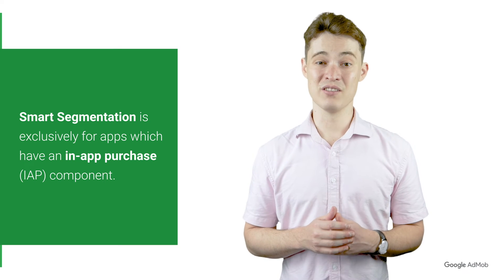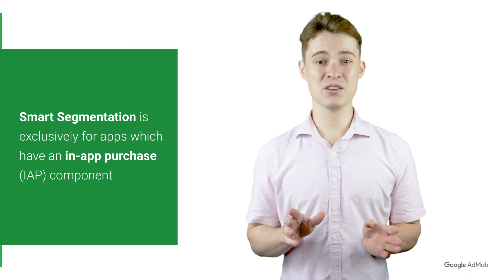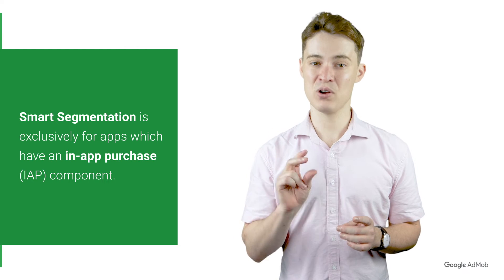Since Smart Segmentation divides users into purchasers and non-purchasers, it's a feature designed exclusively for apps which have an in-app purchase component, or IAP. Note that while this is not compulsory, it is recommended that your app has at least 1,000 purchases. This is because having significant volume will allow for more accurate segmentation of your users. Even if you don't currently have IAPs within your app but plan to incorporate them soon, we recommend you continue to watch to learn how to approach Smart Segmentation when you're ready.